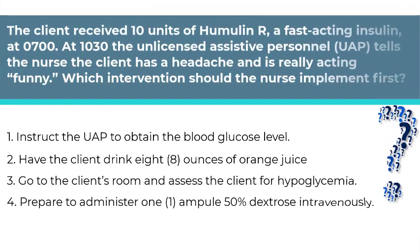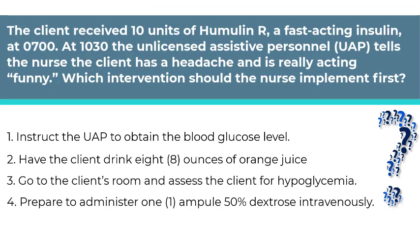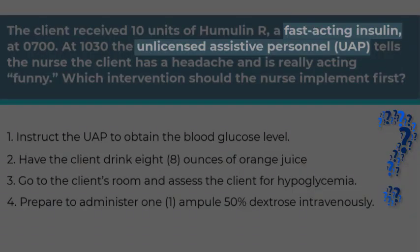Next question. The client received 10 units of Humulin-R, a fast-acting insulin, at 700 hours. At 10:30, the unlicensed assistive personnel tells the nurse the client has a headache and is acting really funny. Which intervention should the nurse implement first? Number 1: Instruct the UAP to obtain a blood glucose level. Number 2: Have the client drink 8 ounces of orange juice. Number 3: Go to the client's room and assess the client for hypoglycemia. Number 4: Prepare to administer one ampoule of 50% dextrose intravenously. This is an analysis question in the implementation phase and also a priority question. The key is to remember the action of the medication and the role of the UAP.